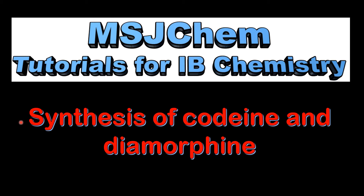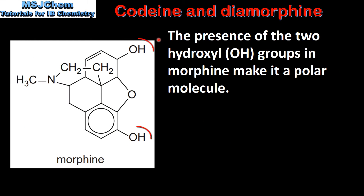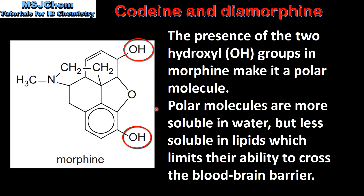This is MSJChem. In this video I'll be looking at the synthesis of codeine and diamorphine. The presence of the two hydroxyl groups in morphine make it a polar molecule. Polar molecules are more soluble in water but less soluble in lipids, which limits their ability to cross the blood-brain barrier.